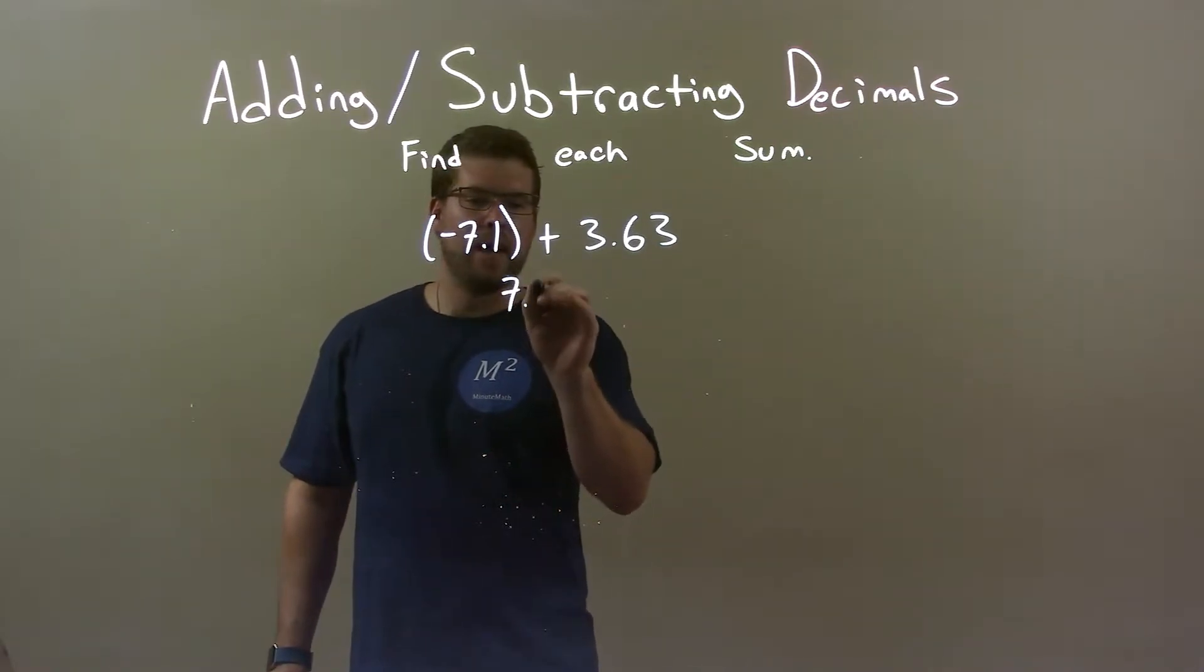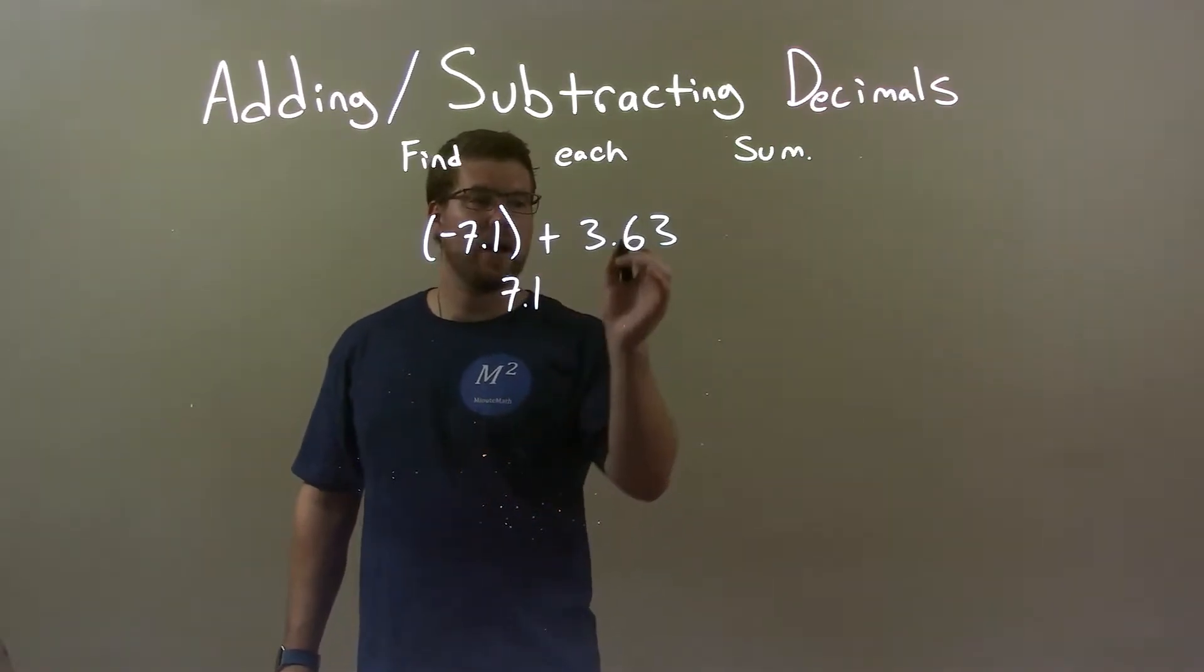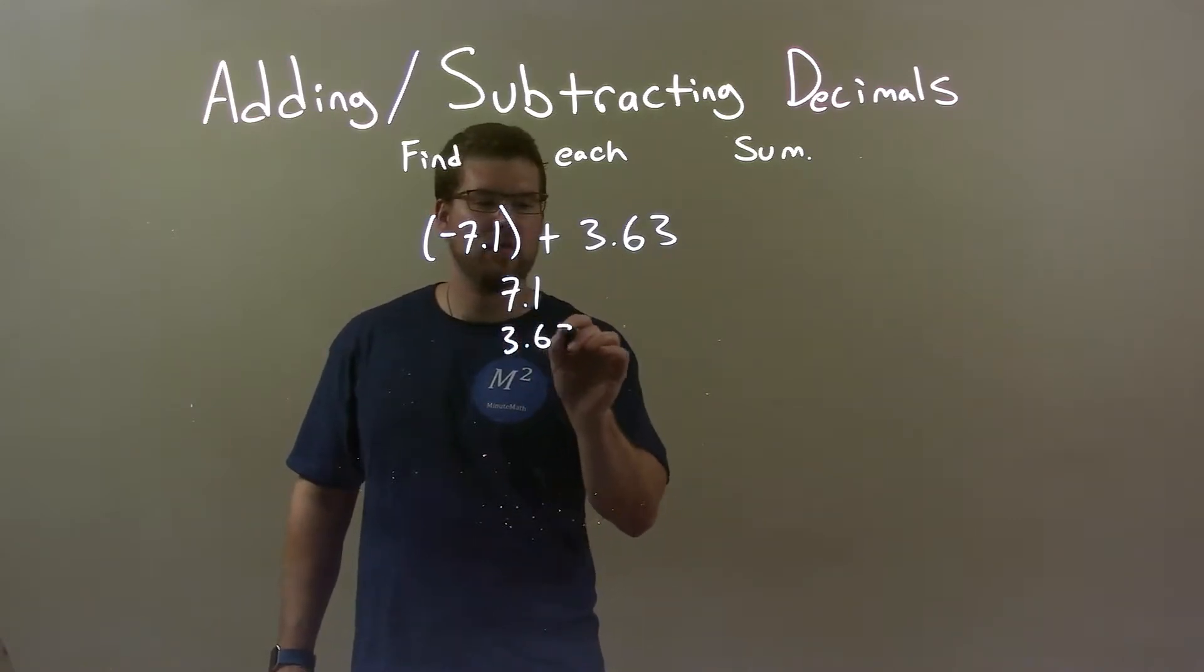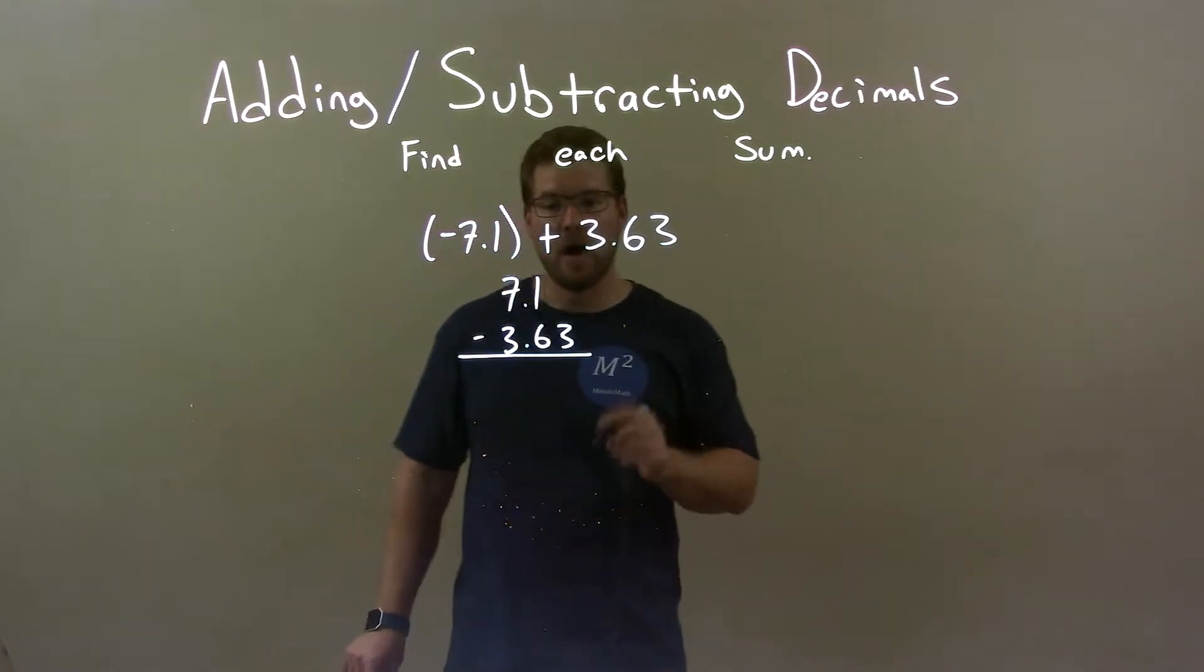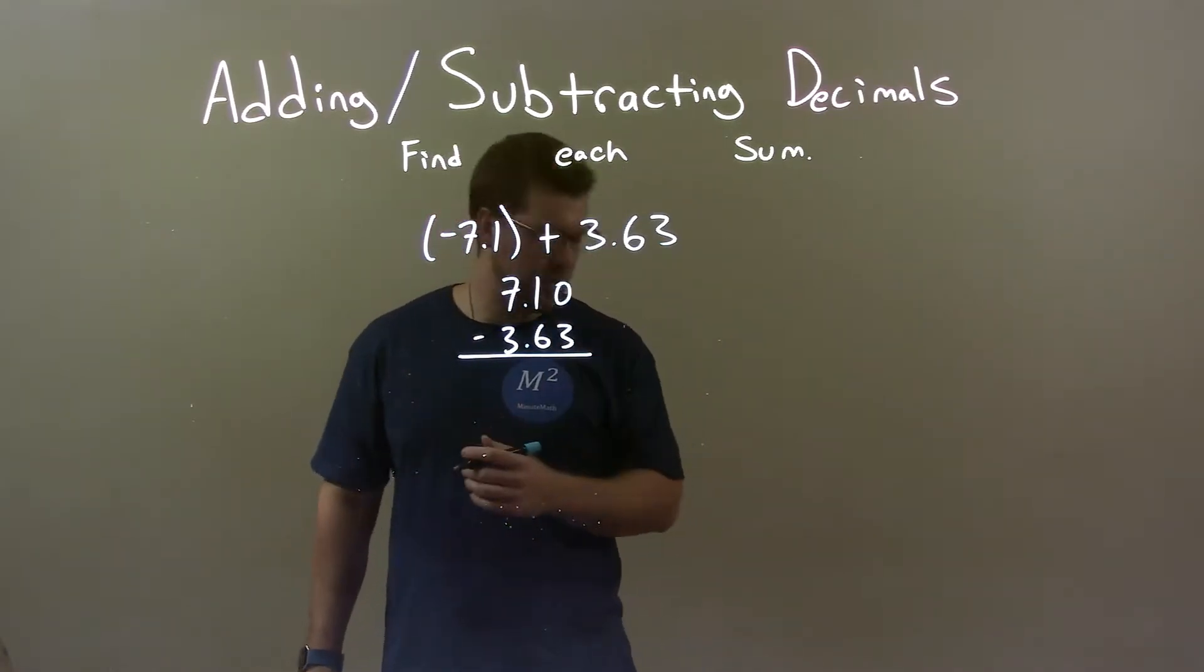So, I take the larger after the absolute value, 7.1, and I'm going to subtract 3.63 from it. So, 3.63, and we subtract it. Now, make sure the decimals line up there. I'm going to put an extra zero here, and now let's go for it.